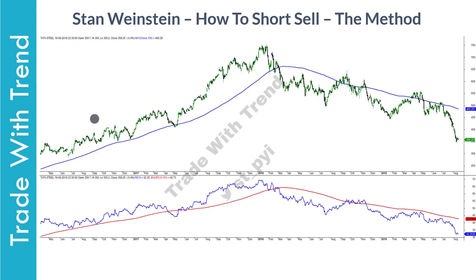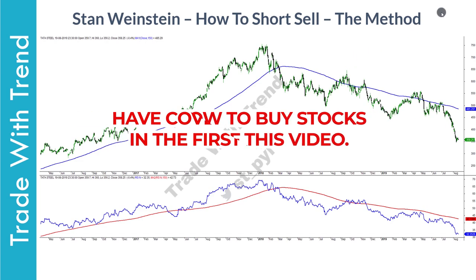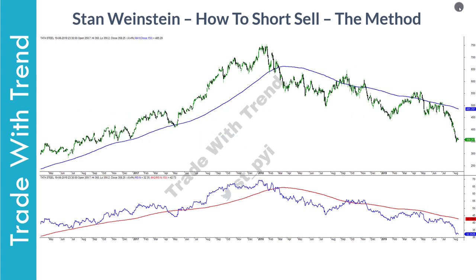Before we get started, I have covered the first part of this series where I've shown how to buy stocks based on Stan Weinstein's method. In case you have missed that video, a link will come up at the top right end of your screen. So this is how you have to set up your charts. I have marked out standard candlesticks along with a 150-period moving average on the chart.